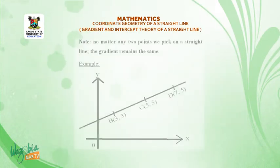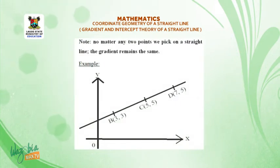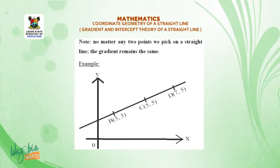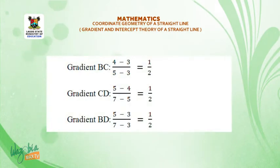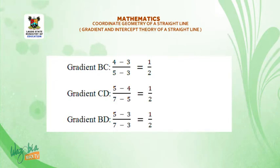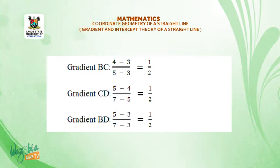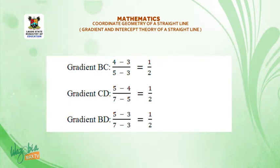Note: no matter which point we pick on a straight line, the gradient remains the same. For example, in the diagram with points B, C, D, and E: gradient BC = (4 - 3) / (5 - 3) = 1/2; gradient CD = (5 - 4) / (7 - 5) = 1/2; gradient BD = (5 - 3) / (7 - 3) = 1/2. All equal.